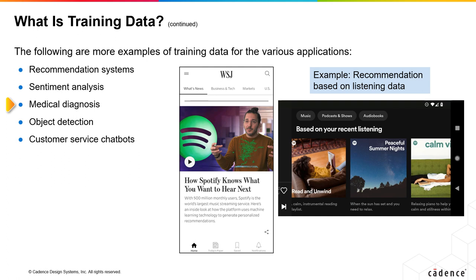To detect objects, a set of images is used with annotations indicating the location and type of objects present in the image to train the AI model to identify objects in new images.